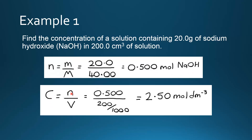Next we use C equals N over V. N is 0.500 moles of sodium hydroxide, divided by the volume, which is 200 divided by 1000 to convert to decimeters cubed. That gives us a concentration of 2.50 moles per decimeter cubed.